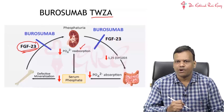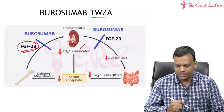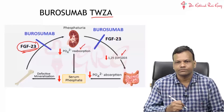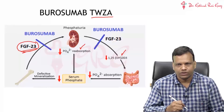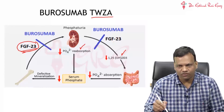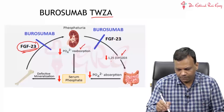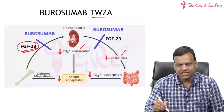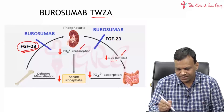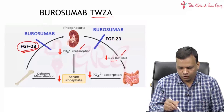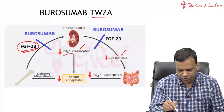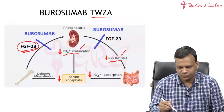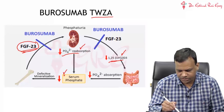The second thing FGF23 does is it inhibits the formation of vitamin D3, calcitriol. When vitamin D3 is not formed, its normal function — which is to help in absorption of phosphate — is lost, so there will be less intestinal absorption of phosphate. These two factors — less reabsorption from the kidney and less intestinal absorption — lead to deficiency of serum phosphate.